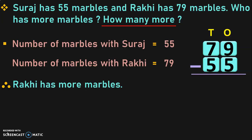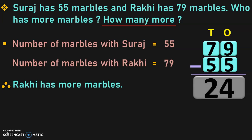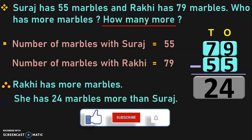Write down the place values and begin the subtraction from the ones place. 9 minus 5 is 4. 7 minus 5 is 2. So the answer is 24 — that is the number of marbles that Raki has more than Suraj. The first part of the answer is Raki has more marbles, and the second part is she has 24 marbles more than Suraj.